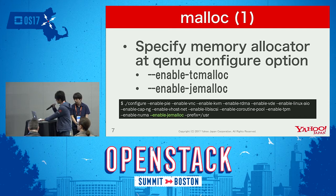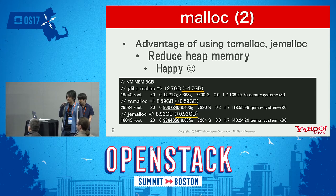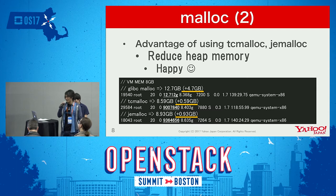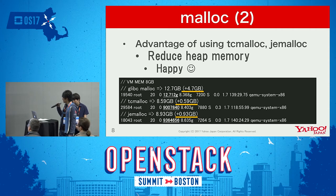The advantage of using another malloc is it can reduce heap memory, which makes everyone happy. For example, in the case of a gigabyte virtual machine, glibc malloc allocates 4.7 gigabytes of extra memory. TCmalloc and jemalloc use less than 1 gigabyte of extra memory.